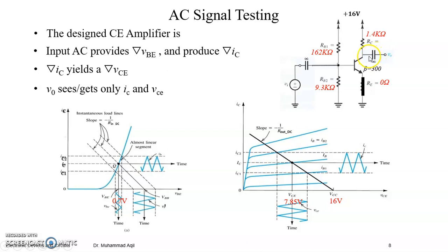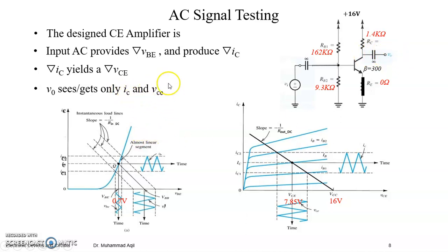So DC will remain here, total will remain here, but only AC will pass here. So it means you can see at the V out only AC collector current, AC collector to emitter voltages about zero, because DC stops here but only AC passed here.